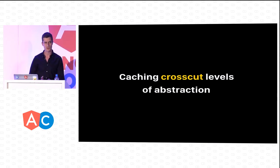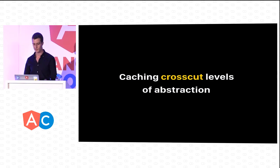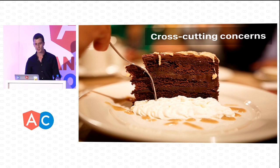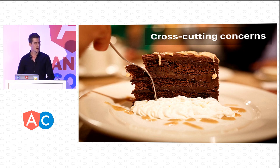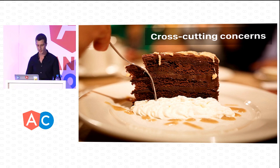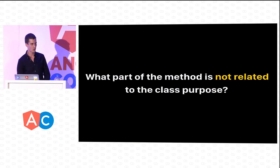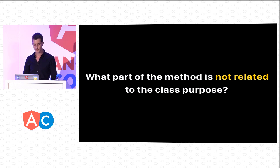We can notice caching functionality appearing at multiple levels of abstraction — on the user finder level, somewhere in the middle, and on the most primitive HTTP API level. These things are known as cross-cutting concerns. They are quite a common problem in object-oriented programming; they cross-cut the levels of abstraction in our applications vertically. Let's look at what part of the code is not actually related to the purpose of the classes.